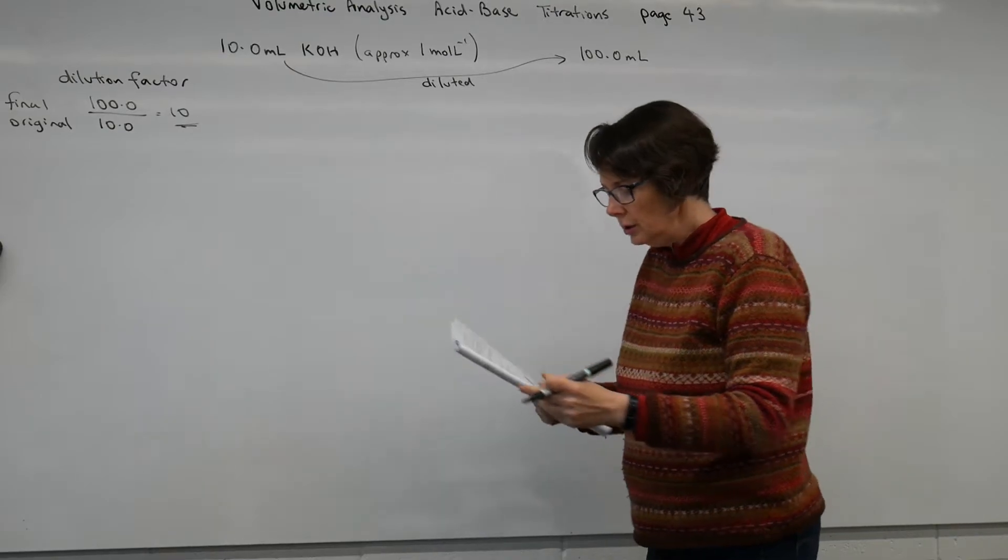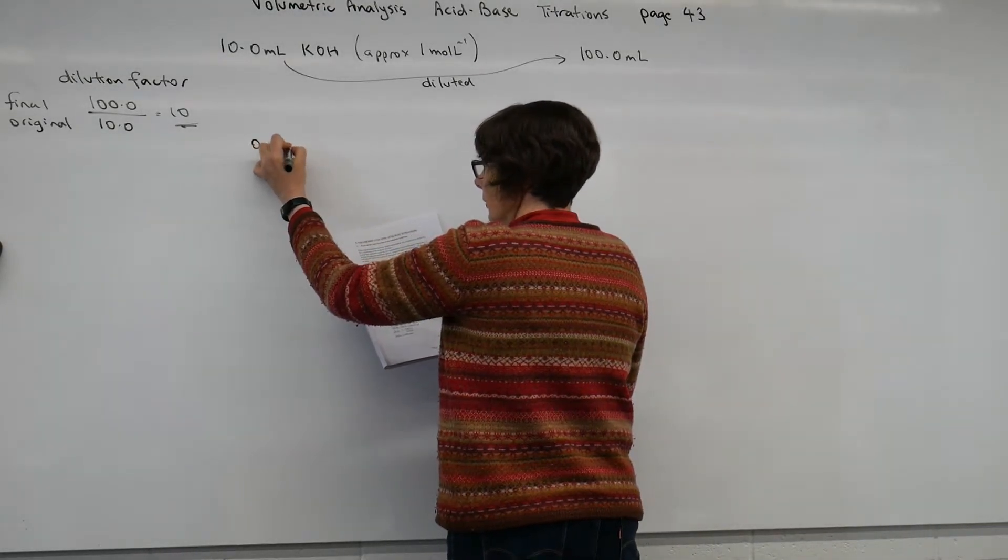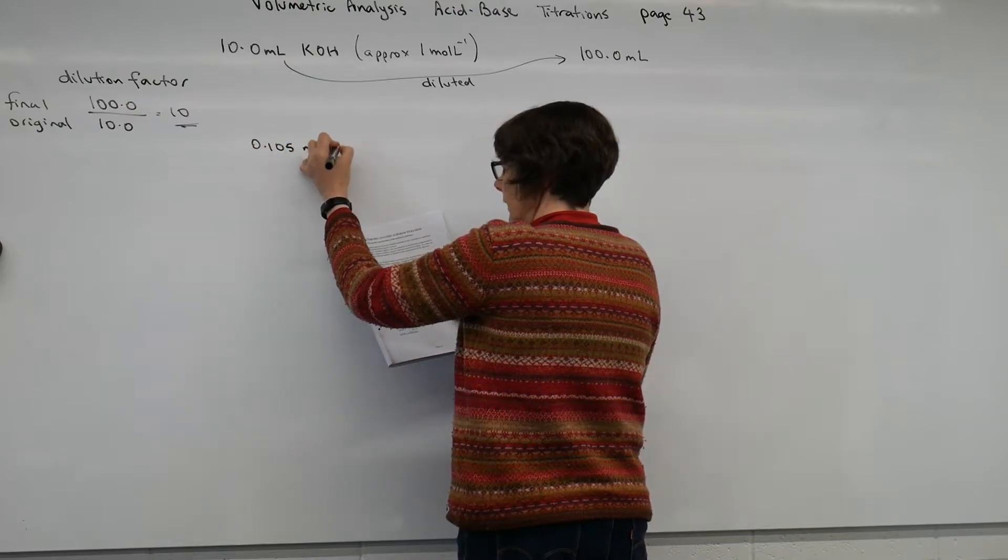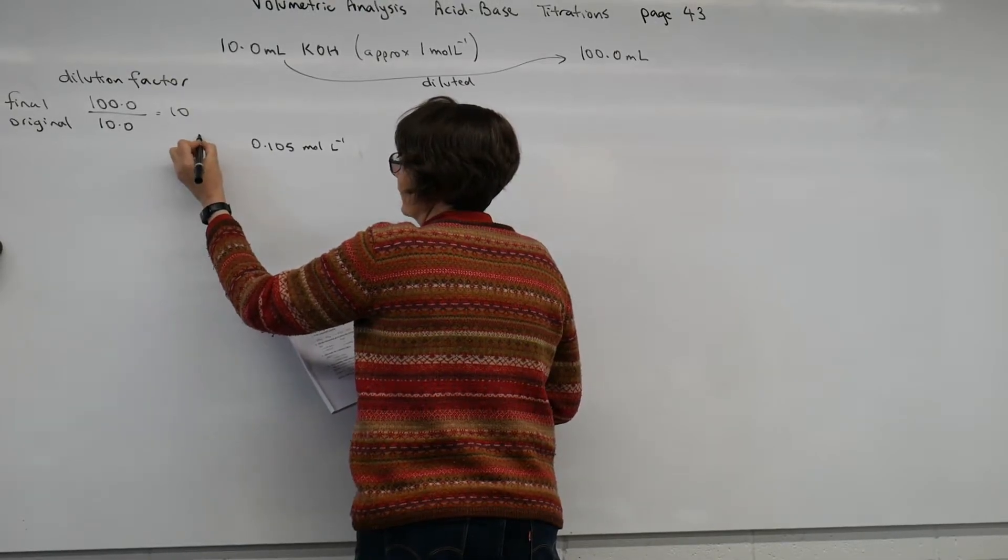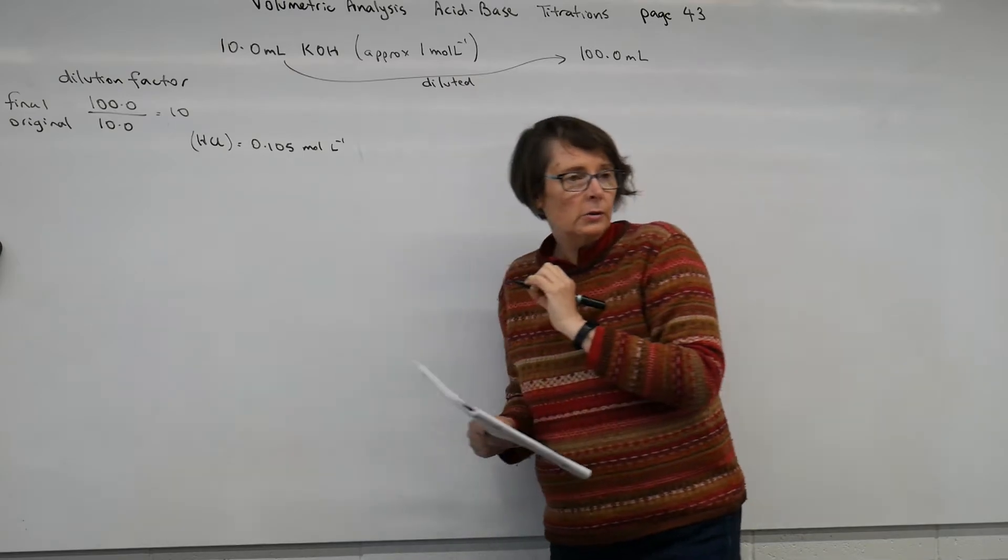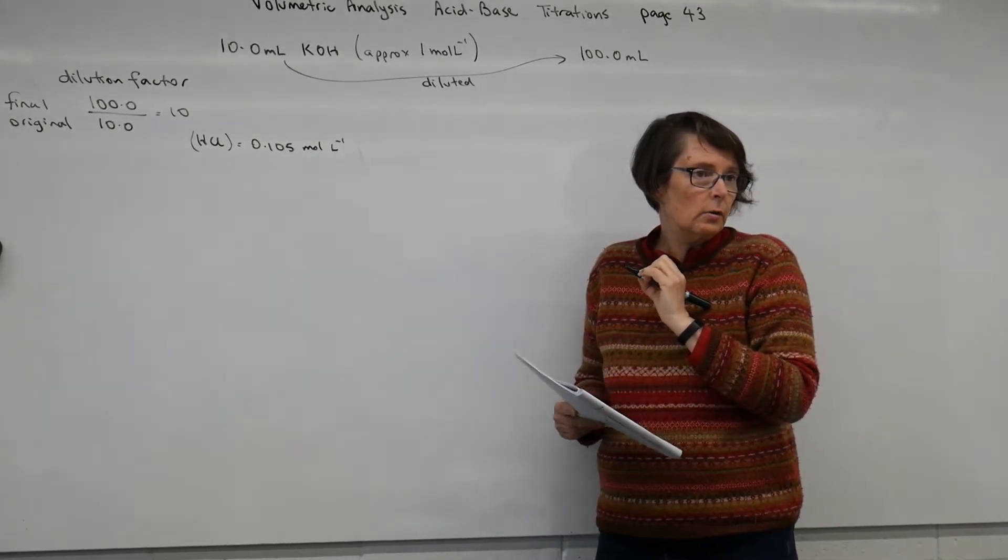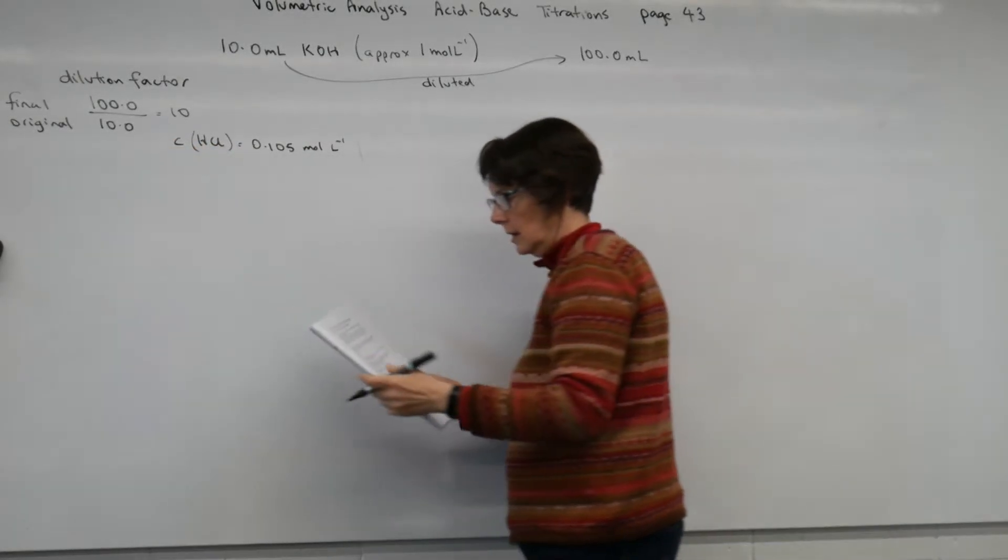So in a titration, 0.105 mole per litre HCl. I'm just going to write that as HCl. And this is obviously the concentration, I can tell by the units that this is the concentration that I've been given.